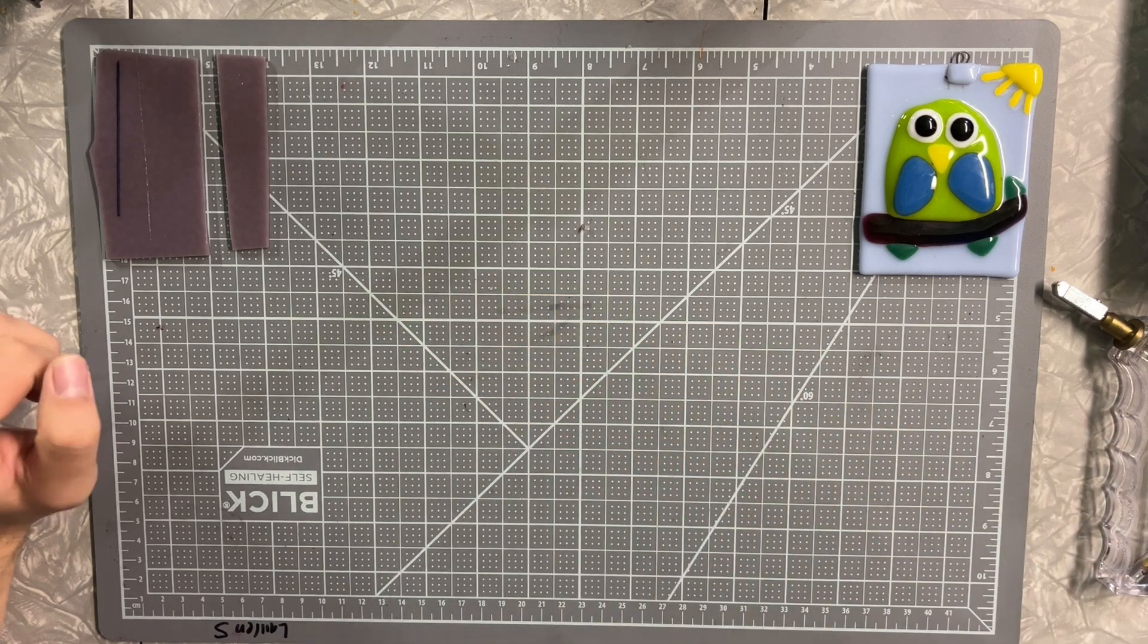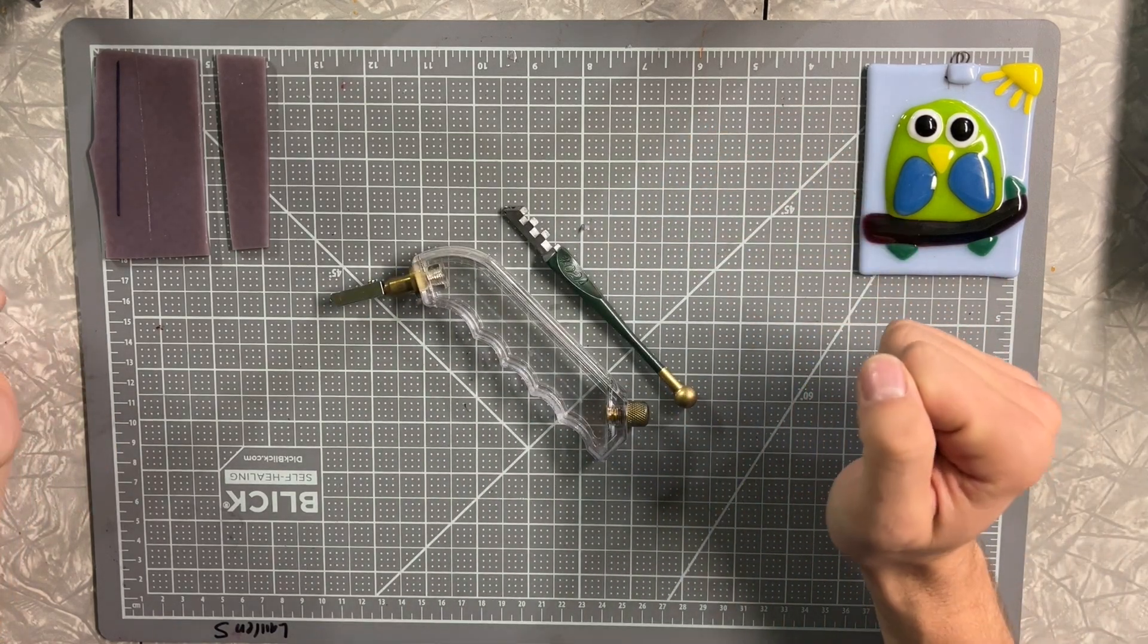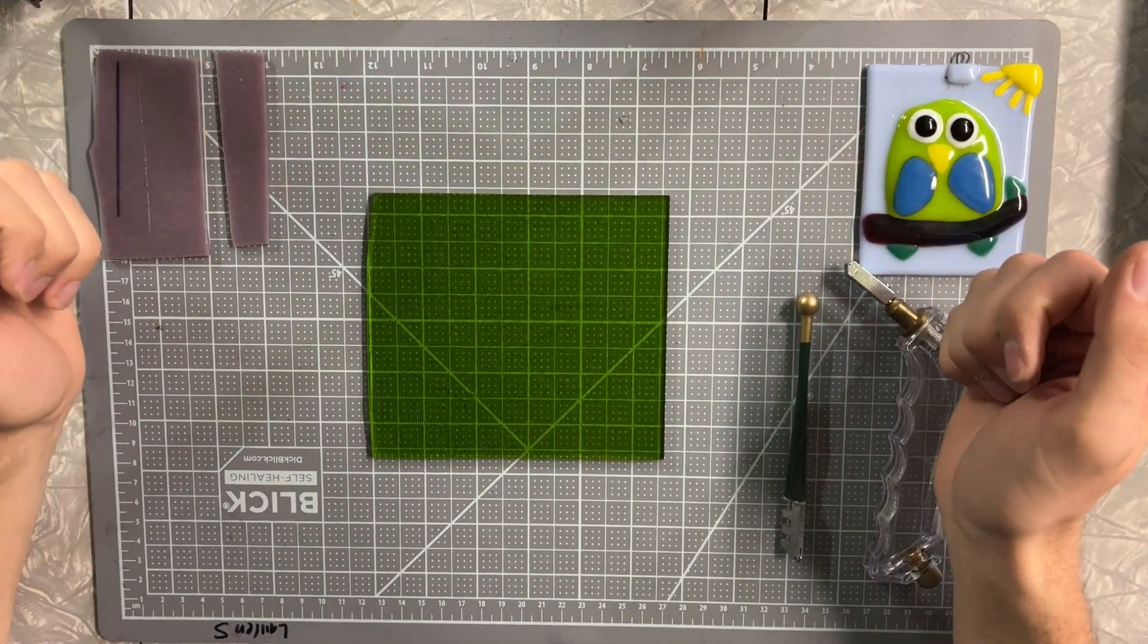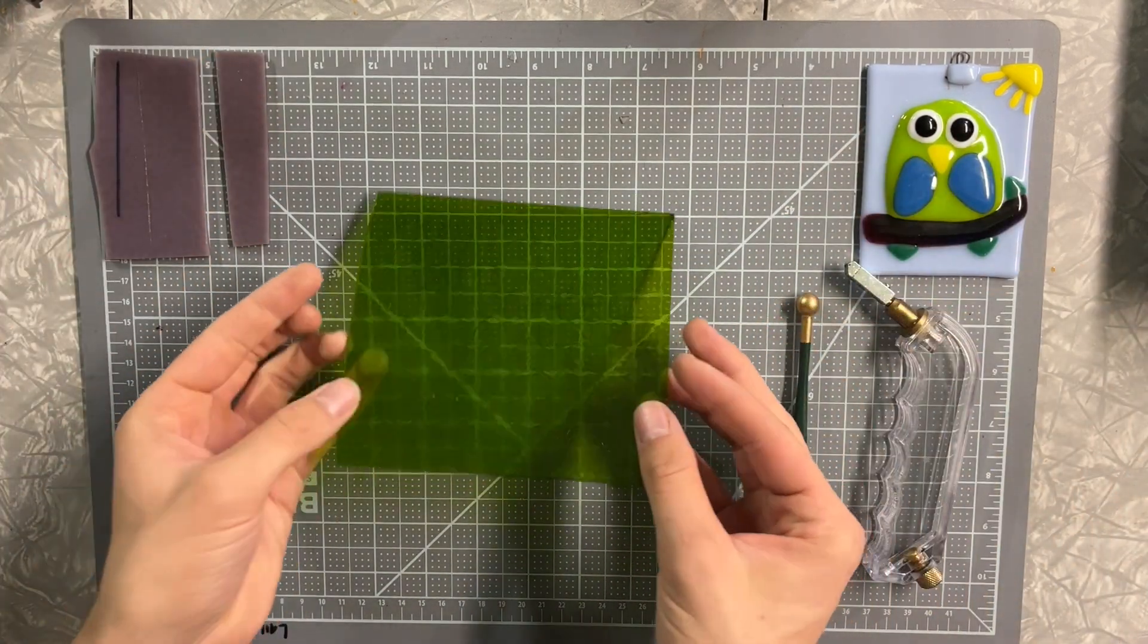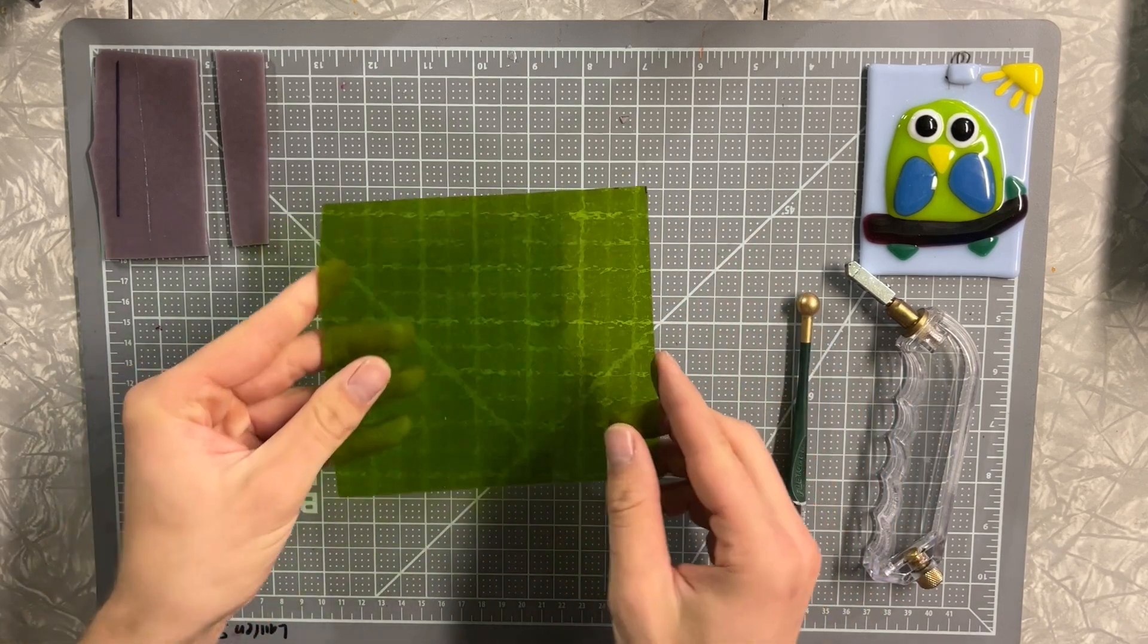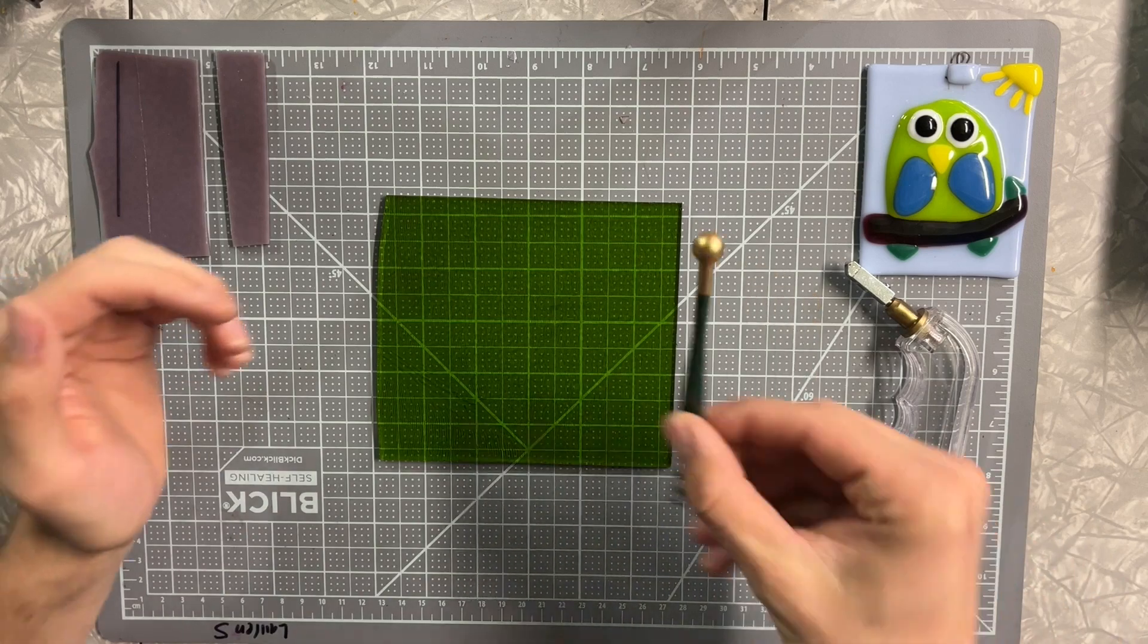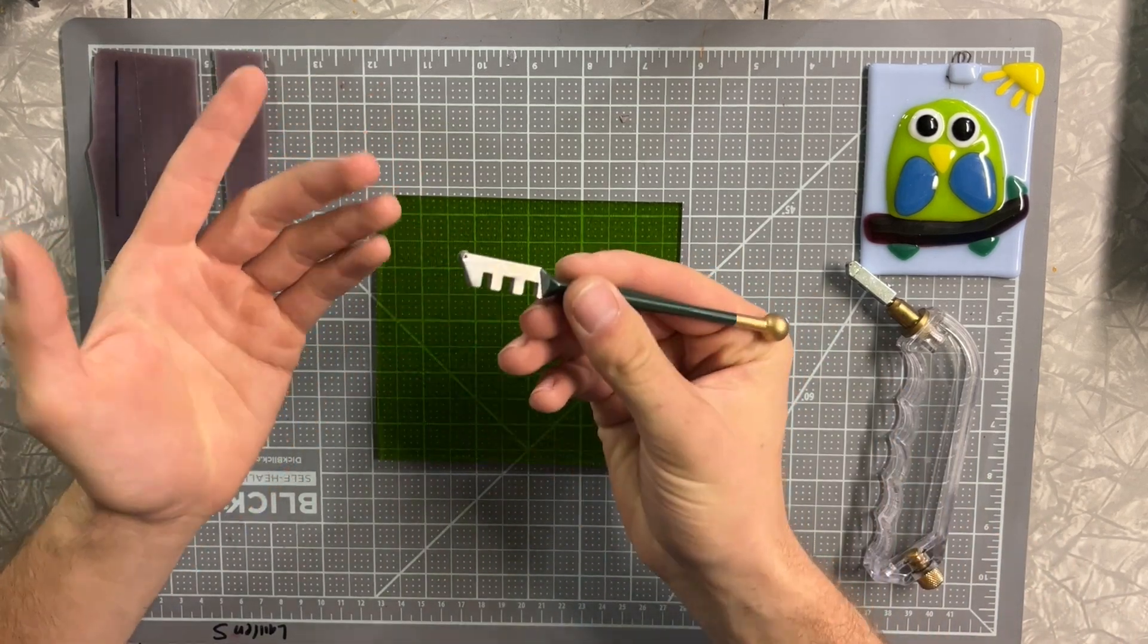Those are the other two tools that we'll be using today. But right now I'd like to go back to our glass cutters and talk about actually how you use them. Here you'll see I have a green piece of transparent glass laid out, which I think is really cool, and we'll go ahead and practice cutting this.